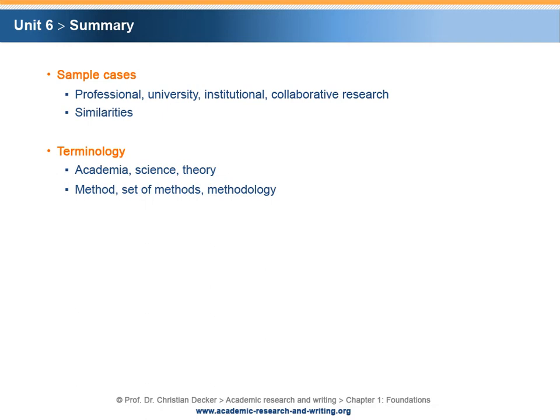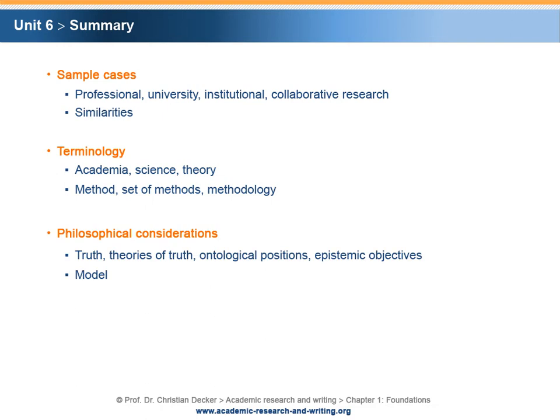Subsequently, we discussed selected philosophical considerations for academic research. The term truth, theories of truth, ontological positions, and epistemic objectives were defined and discussed. Models as typical concepts for simplifying complexity were introduced, explained, and exemplified.